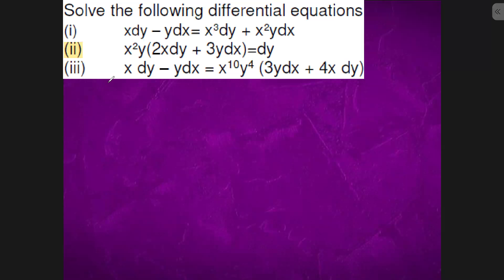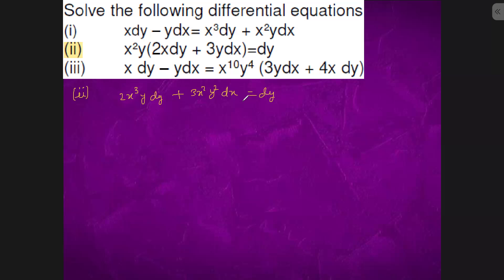This could be simplified — what we will have is like 2x³y dy plus 3x²y² dx equals zero. What we could do is that if we notice...